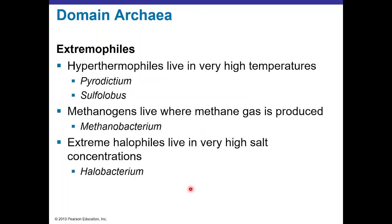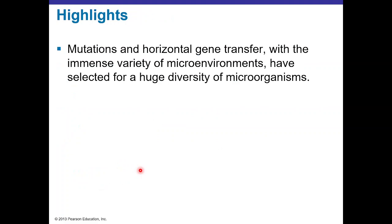For the domain Archaea, we have extremophiles like hyperthermophiles that live at very high temperatures — examples include Pyrodictium and Sulfolobus. Methanogens produce methane gas, like Methanobacterium. Extreme halophiles live in high-salt environments like the Dead Sea, such as Halobacterium. The chapter highlight is that mutations and horizontal gene transfer within bacteria living in diverse microenvironments have selected for a huge diversity of microorganisms.